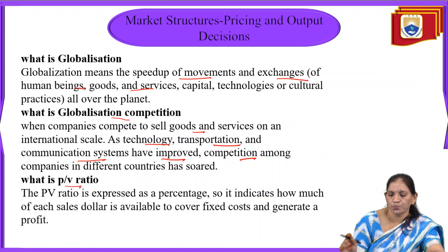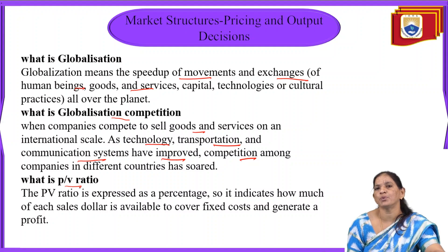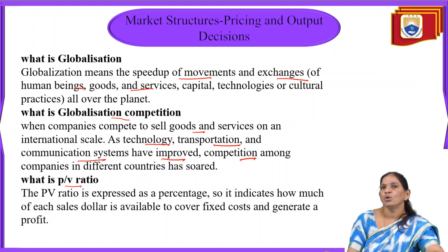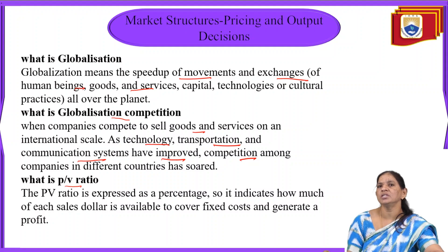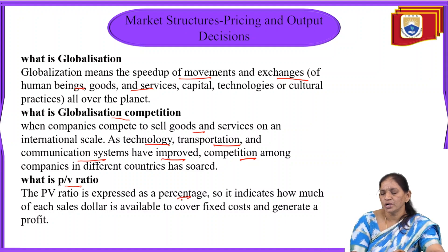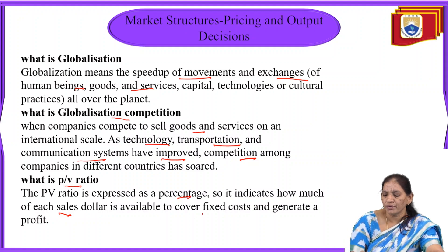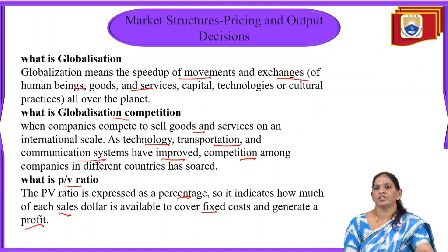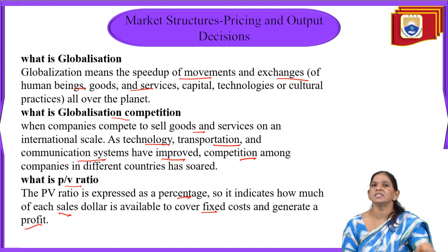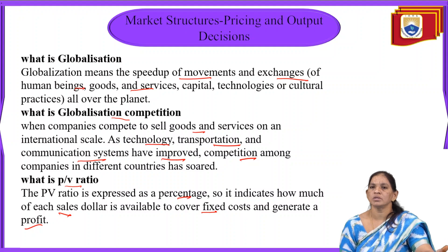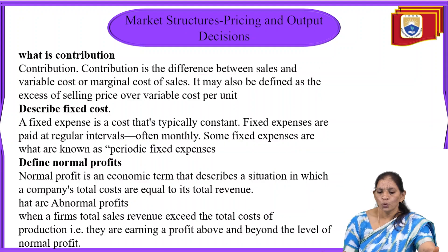What is PV ratio? PV ratio means profit volume ratio, which we use to determine at what rate of profits correspond to what rate of volume of sales. It is expressed as a percentage and indicates how much of sales in rupees or dollars are available to cover fixed costs and to generate profit — that is, what percentage of sales helps overcome cost and generate profits.